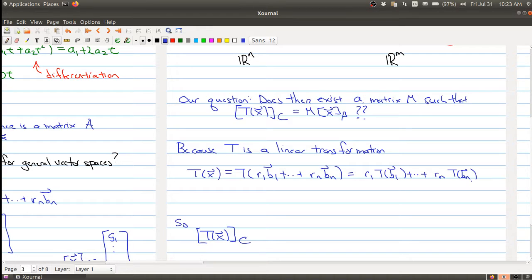So this is what T(x) looks like. And then T(x) of C, we're going to take this and we want to write it in terms of the C coordinates. Well, this is now going to be equal to, and I'll write it like this.